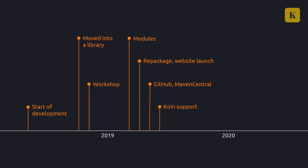Late last year, a testing module was introduced for Rainbow Cake to help testing your view states and events easier. And this year, just last month, I finally made the jump to AndroidX with the framework. I was holding out on this for a while since there were older apps built on Rainbow Cake and I didn't want to force them to migrate, but I figured it was really time by now. I'm going to be brave and put one more thing on this timeline — the 1.0 of the framework. The 1.0 has not been released yet but we are very close. The framework itself has been production ready and stable for a very, very long time, so this is just some final touches before 1.0 very soon, probably in a matter of days.